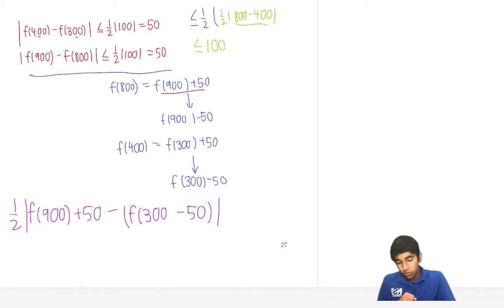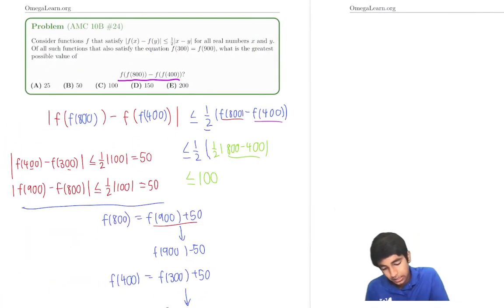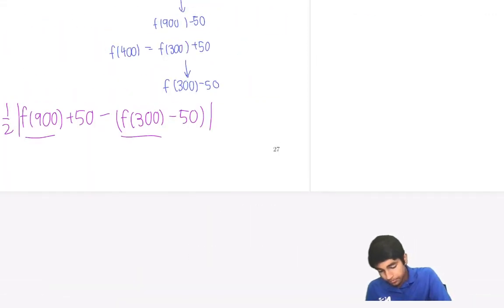Oh! But we know these two quantities, f(300) and f(900), are equal as given by the problem statement. So then, this is just equal to 1/2 of these quantities are equal and 50 minus, oh great. This is 50 over here. Then it's minus minus 50. So plus an additional 50.